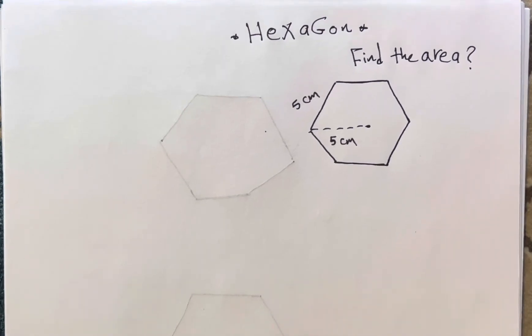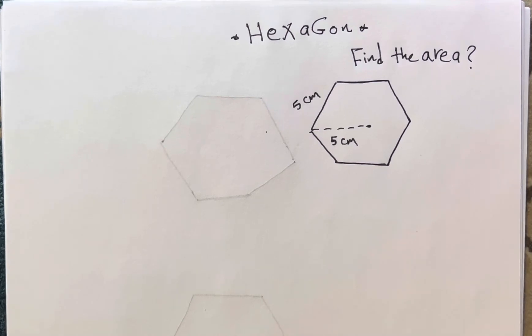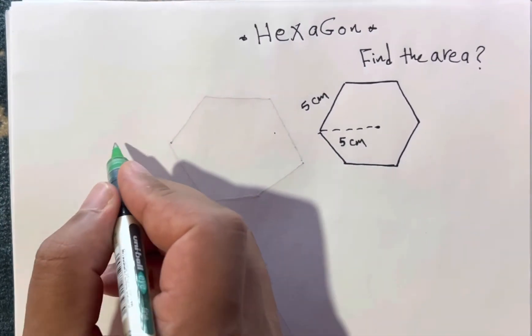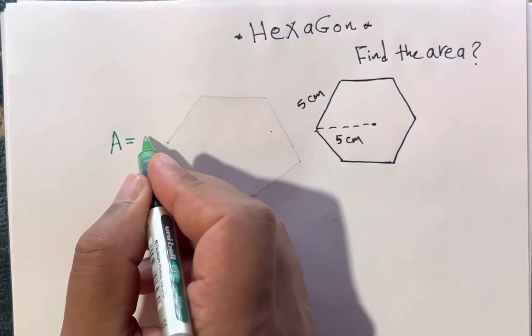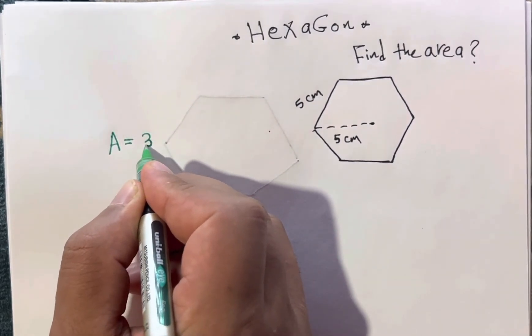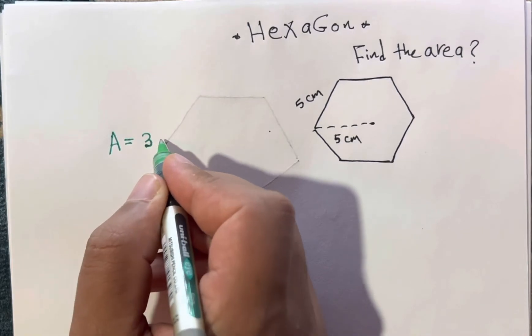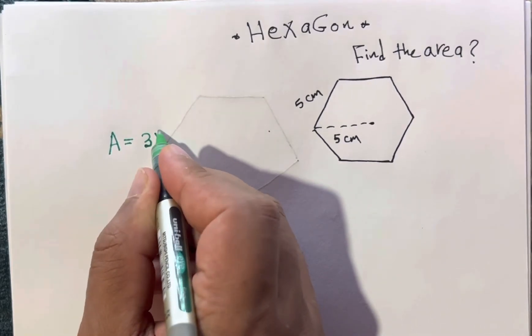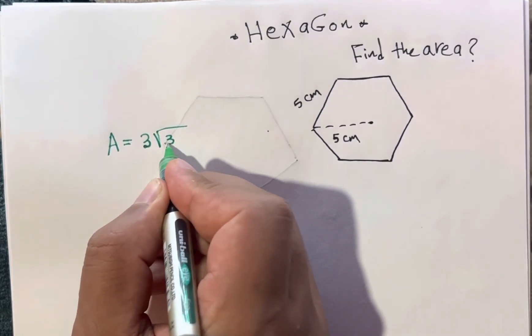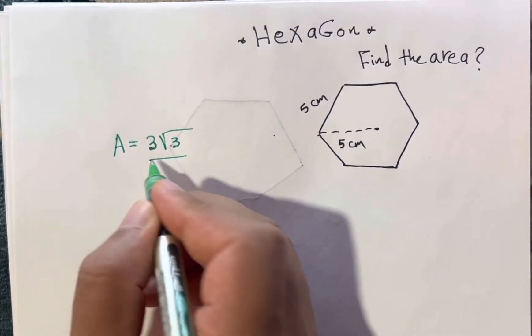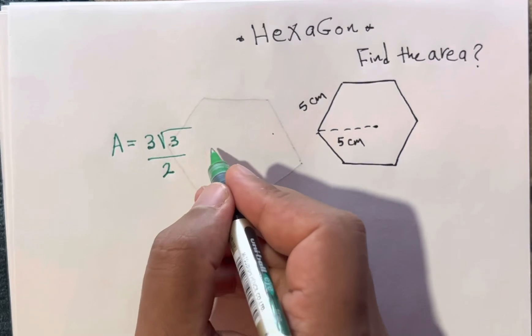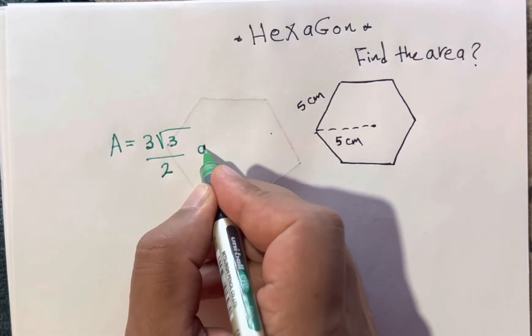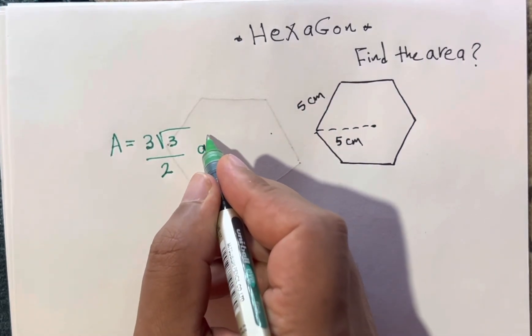The formula is: area equals three square root of three over two, multiply by a squared. A squared.